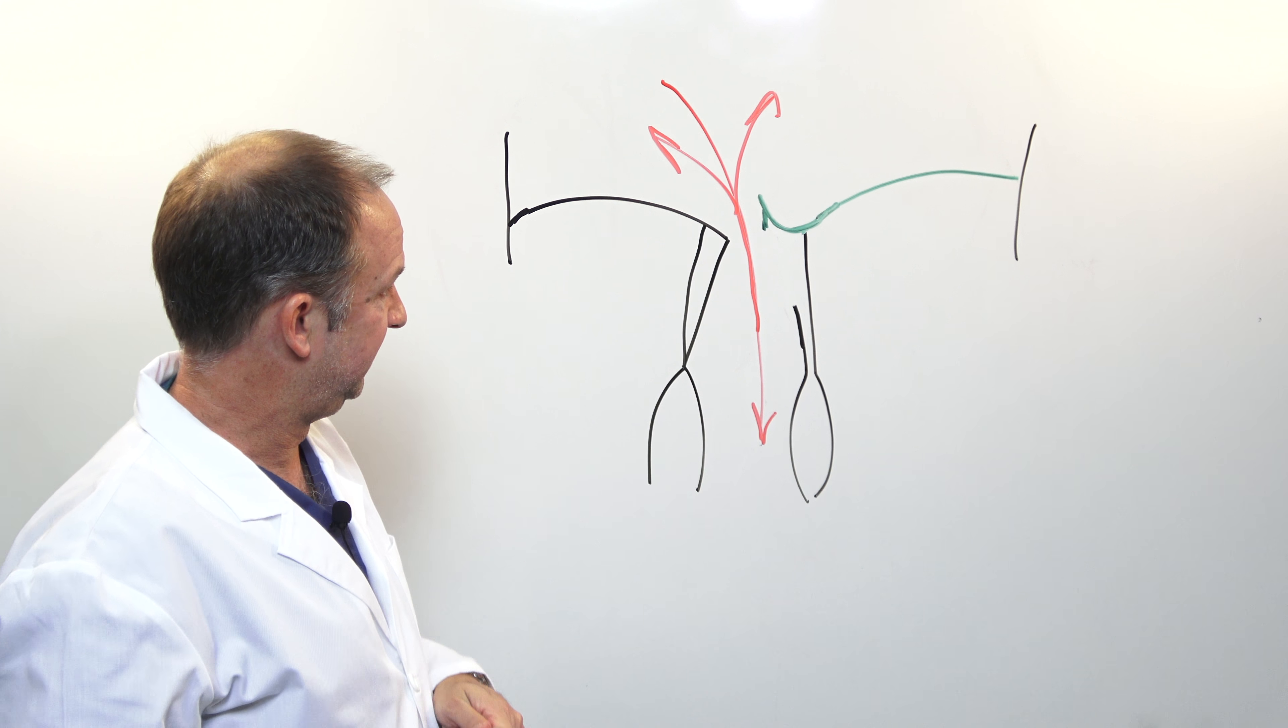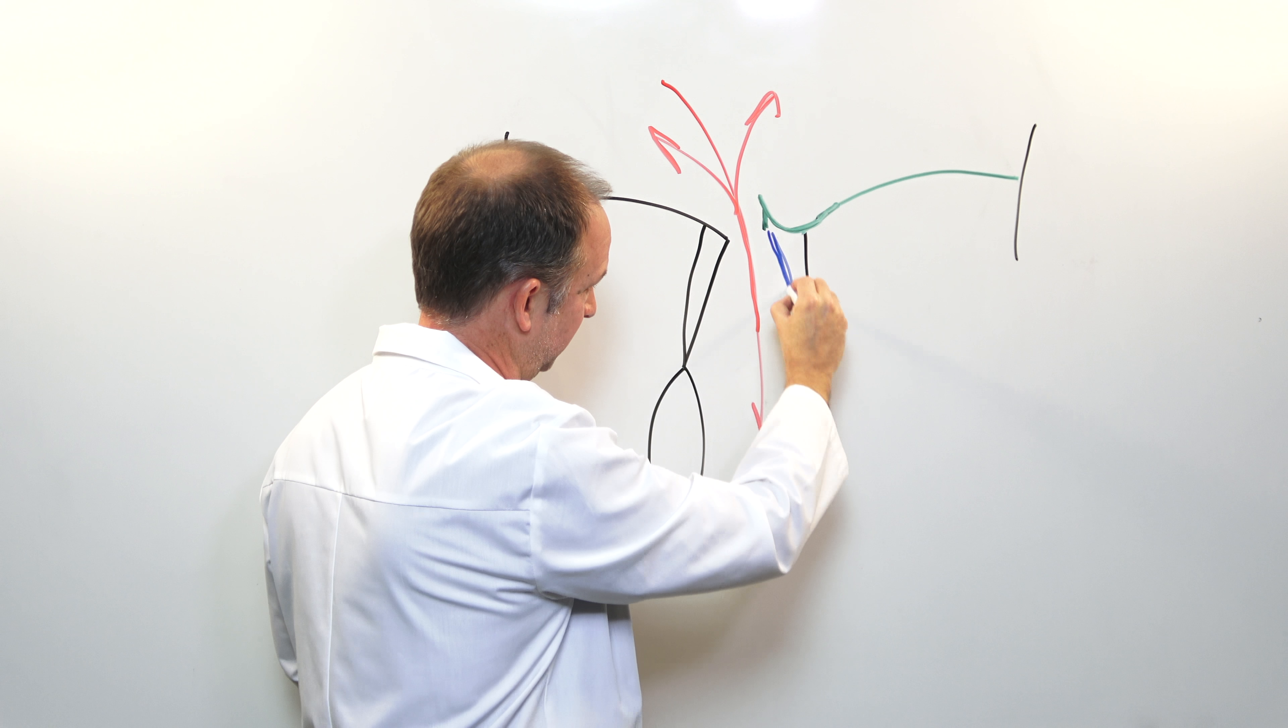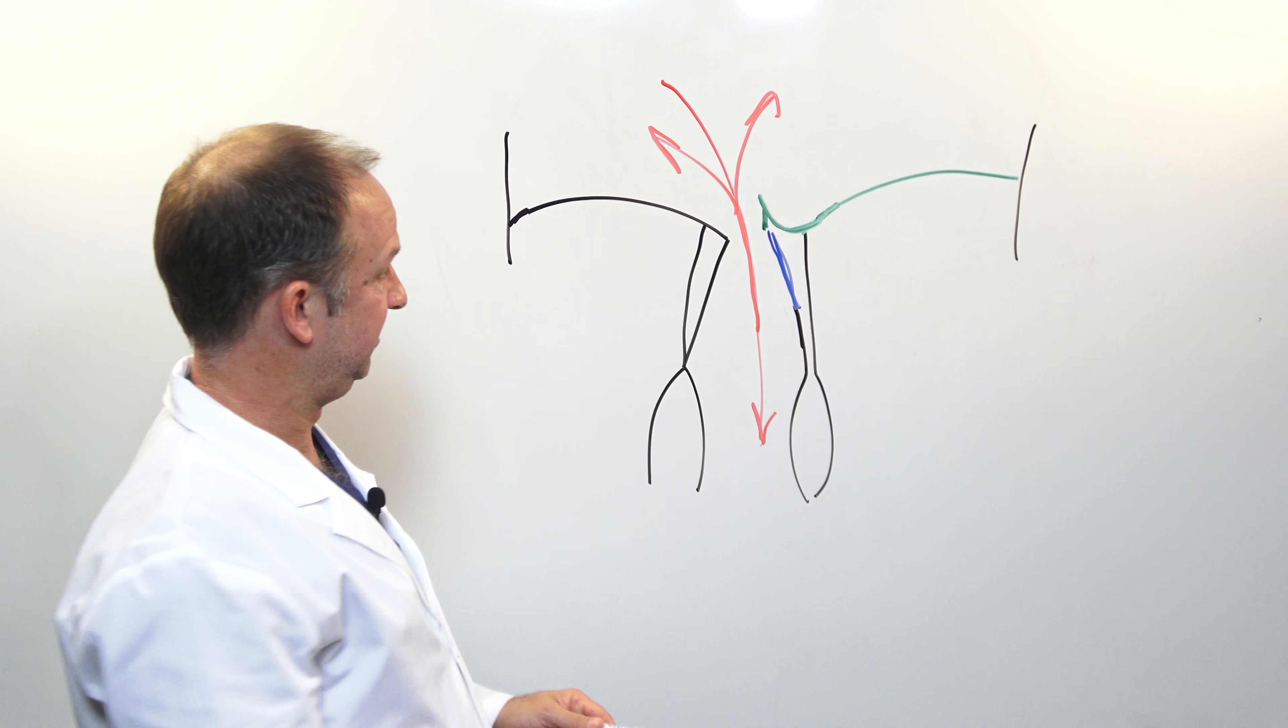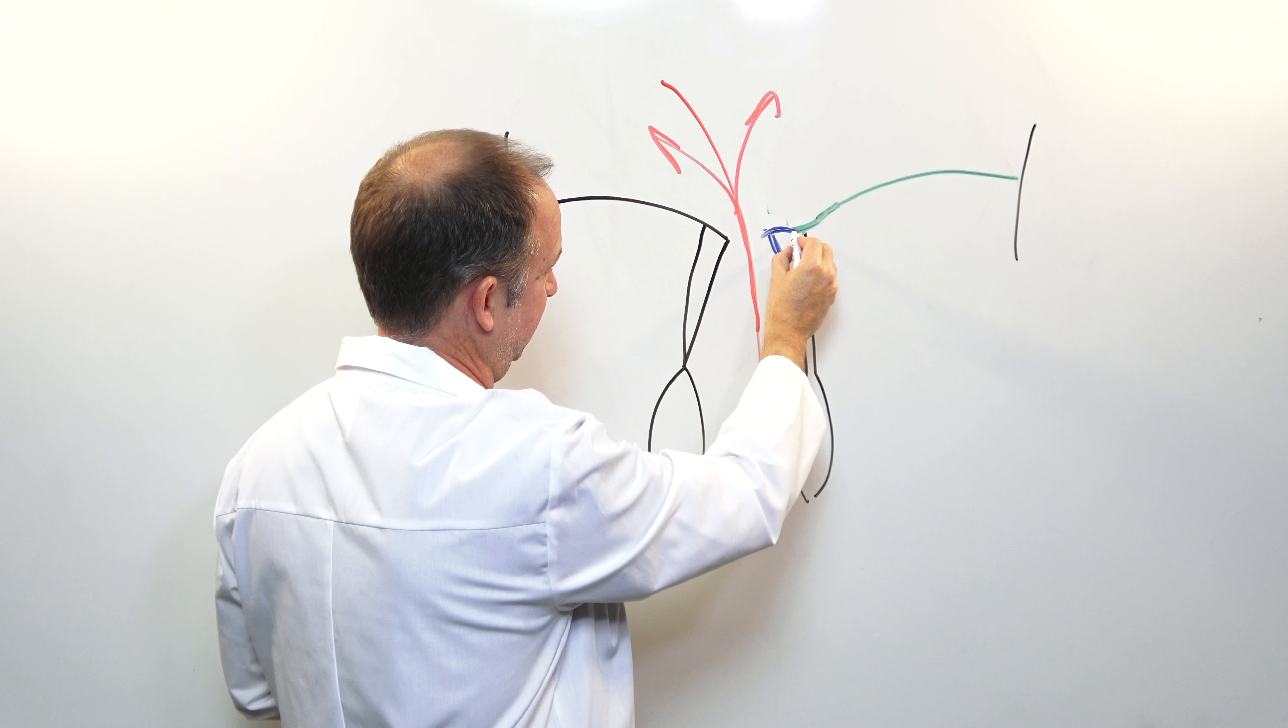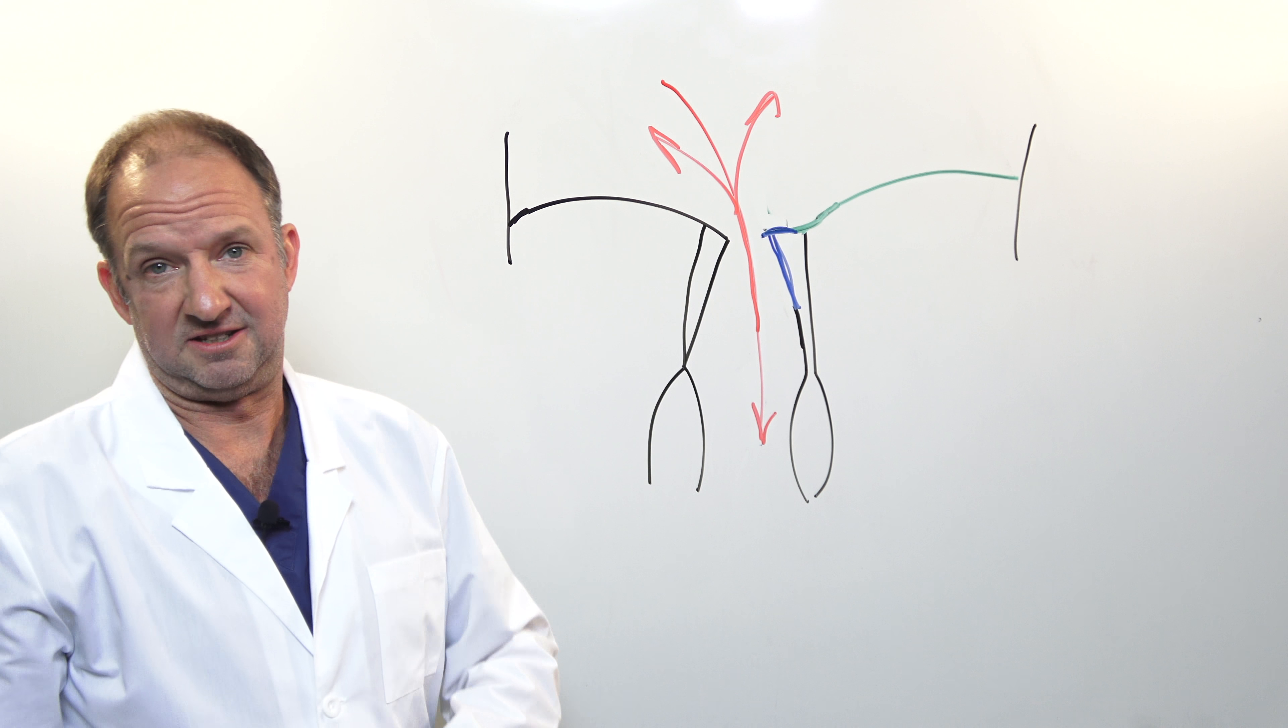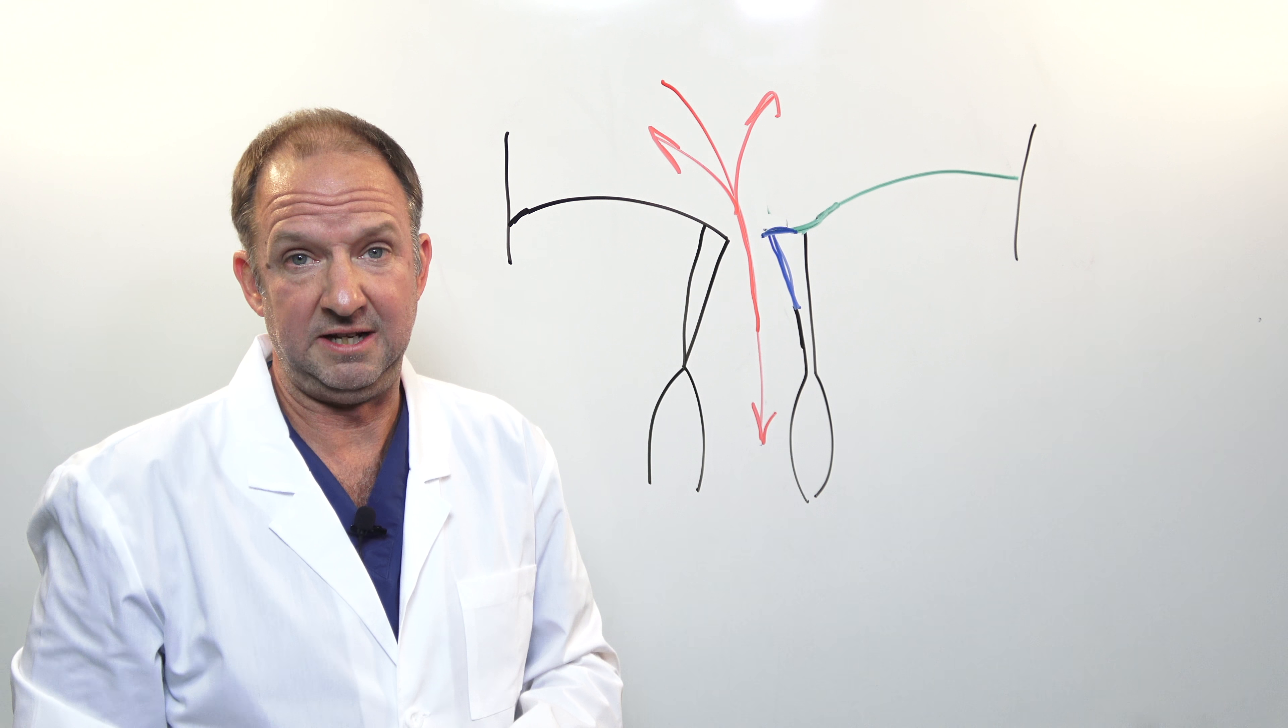Commonly what we do in these cases is that we replace the broken chord. And by doing that, we reestablish the kissing point of the leaflets allowing the valve to be competent again.